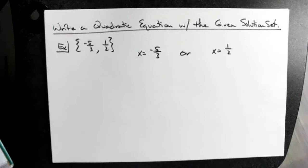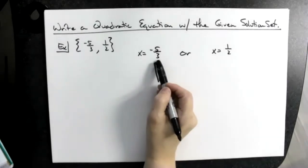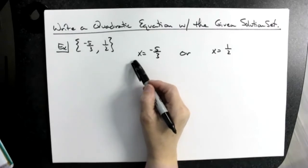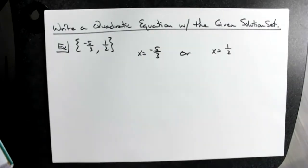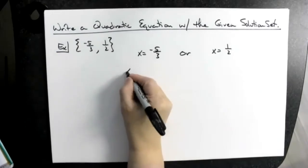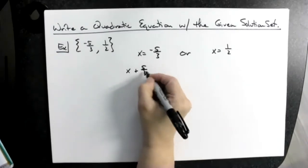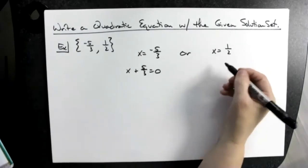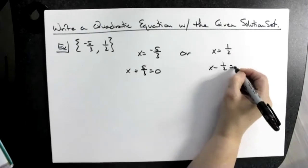I'm going to go backwards. Let's take each solution and move it to the other side of the equation. If you think about factoring, I would set both things equal to zero. So add five-thirds to both sides: x plus five-thirds equals zero. Do the same thing on the other side — subtract one-half — so x minus one-half equals zero.